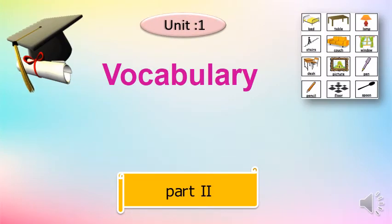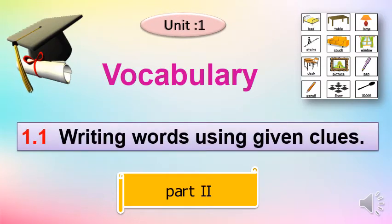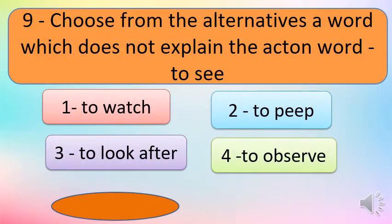This is part two for unit number one, vocabulary, sub-unit 1.1: writing words using given clues. Question number nine: choose from the alternatives a word which does not explain the action word 'to see.' You have to choose from the given alternatives — which word does not explain the action word 'to see,' meaning 'dekhna' (to look).